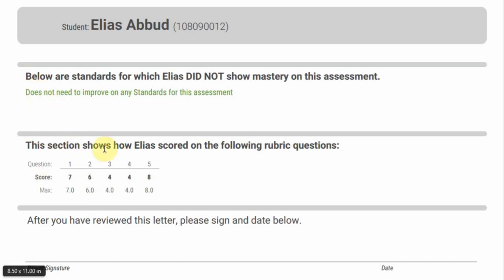Now the section right here just shows how many points they received on each area. So for example, for question one, there were seven points available and he got a seven.